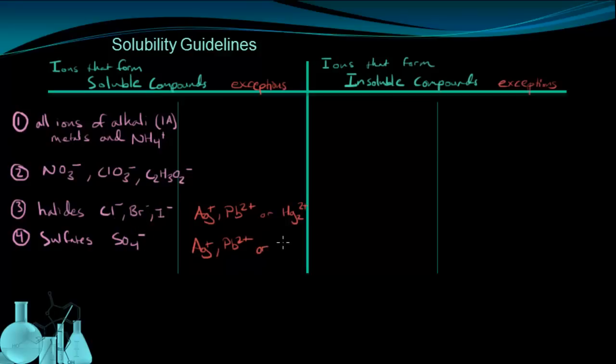And these other exceptions are typically group 2 metals. Not all the group 2 metals, but specifically calcium, strontium, and barium. These ions show up as an exception to sulfates. And this group of three is going to be a nice one to remember because it shows up as an exception for insoluble as well.